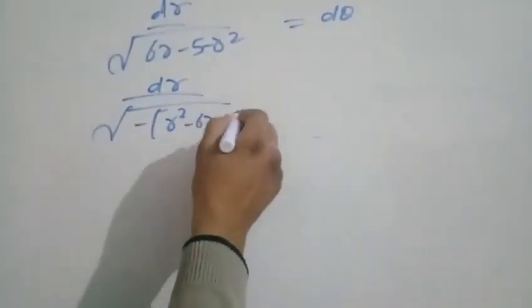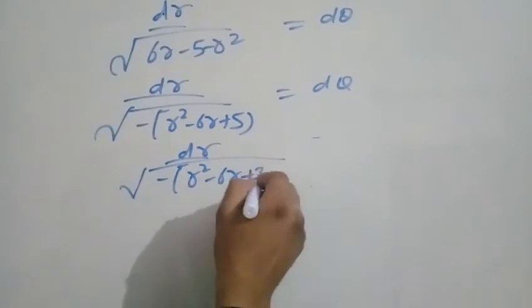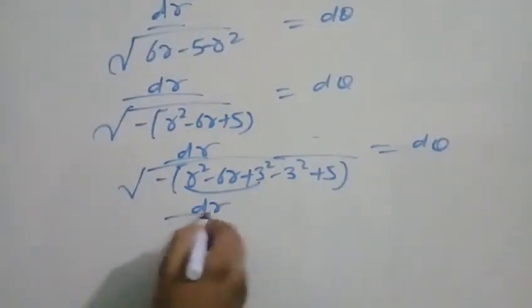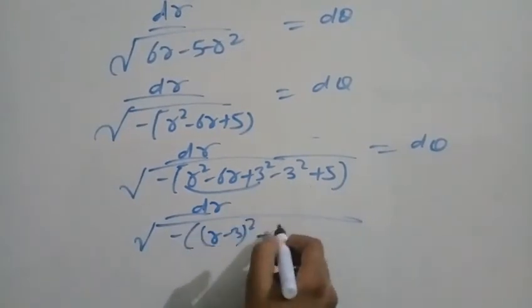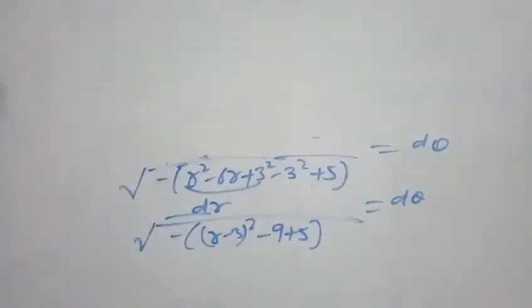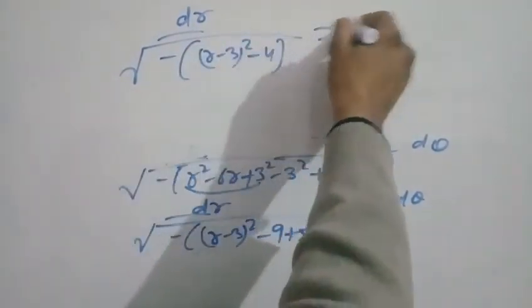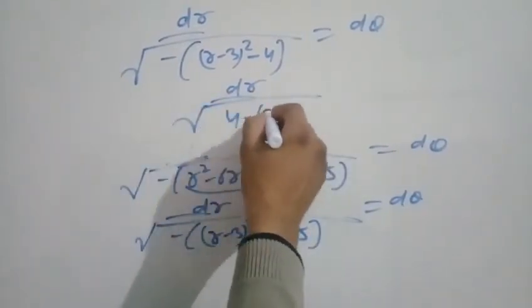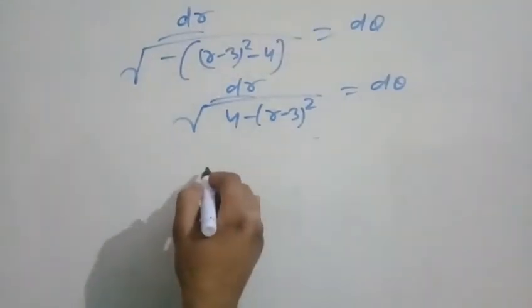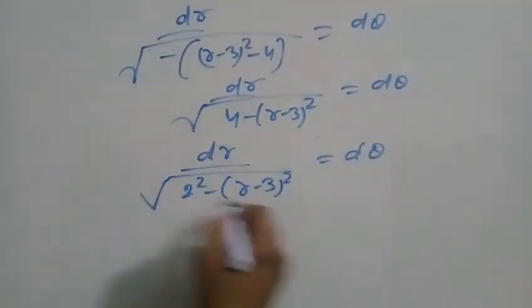This gives: dr upon √(minus r² minus 6r plus 5) equal to dθ. Completing the square by adding and subtracting 9: dr upon √(minus(r minus 3)² minus 9 plus 5) equal to dθ, giving dr upon √(4 minus (r minus 3)²) equal to dθ. So dr upon √(2² minus (r minus 3)²) equal to dθ.